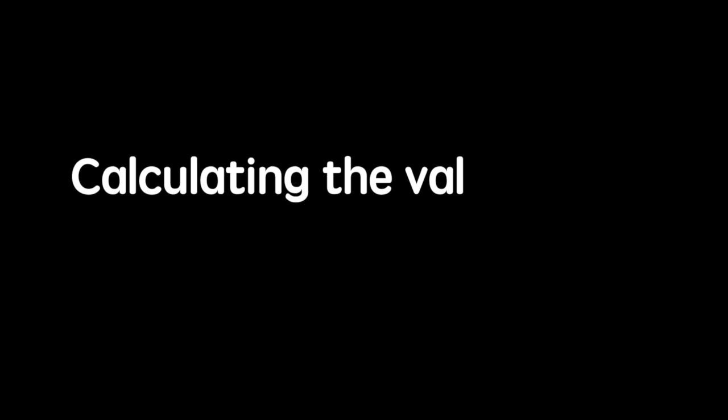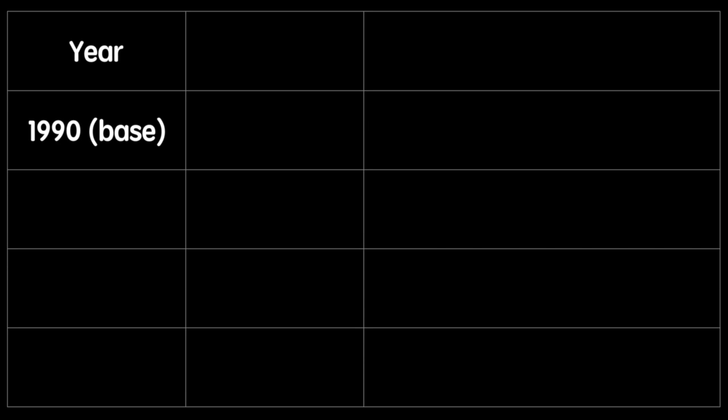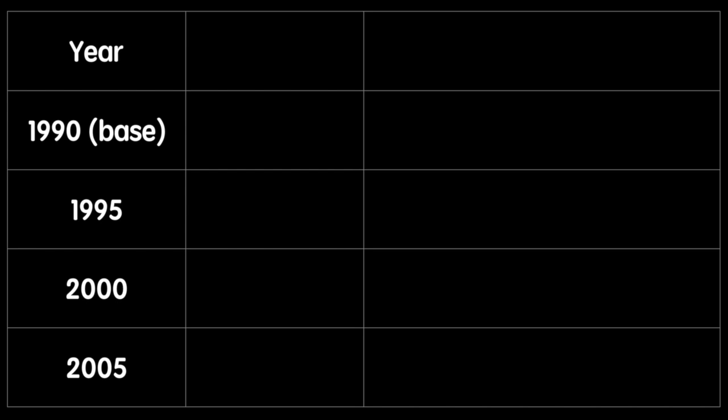Now that we know the CPI is measured by looking at changes in the price of the market basket, let's see how it's actually done. Let's look at a series of years and the nominal prices of the same market basket each year. We'll start with 1990 and use it as our base year — the year against which we compare changes in price. In the second column we list the nominal prices of the market basket each year, and you can see a trend of increasing prices which we'll use to calculate our price index.